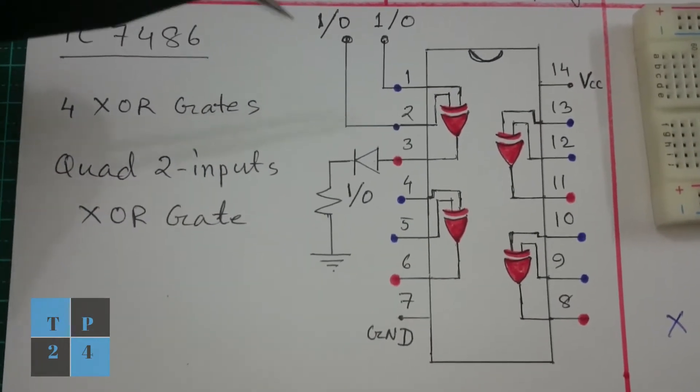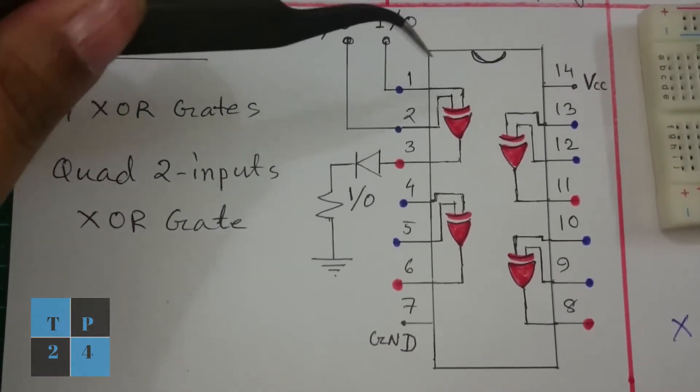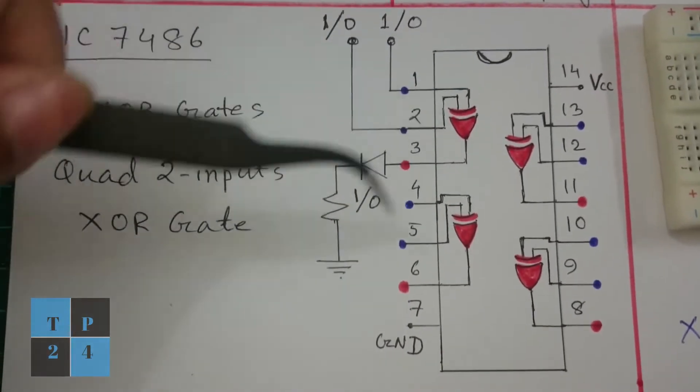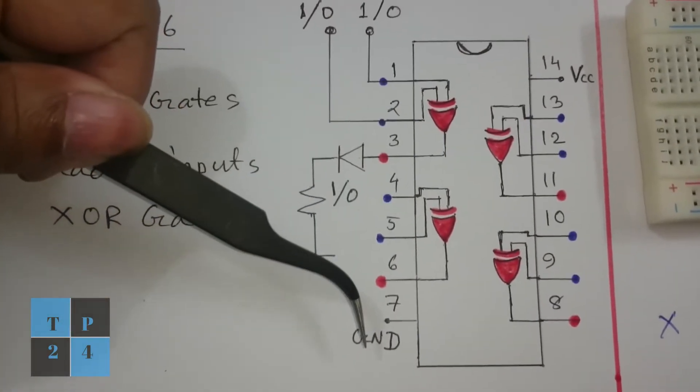That means it has 4 XOR gates inside this IC. And here is the pin configuration and we can see pin number 14 is VCC and pin number 7 is the ground.